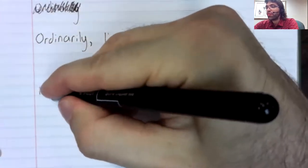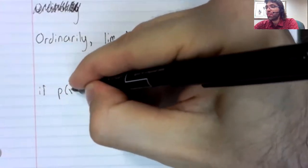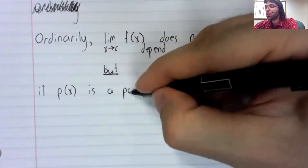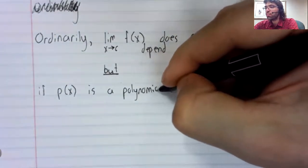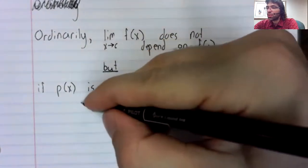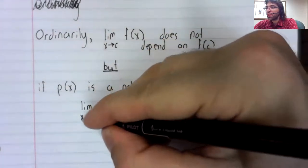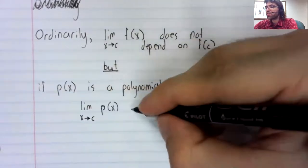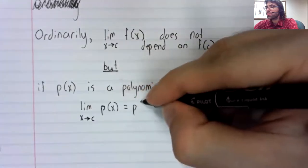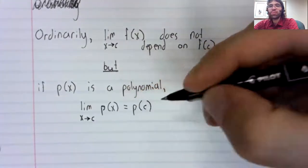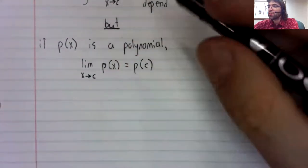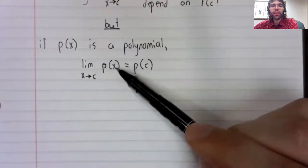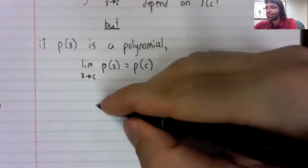But if p of x is a polynomial, the limit as x approaches c of p of x is p of c. So, in this case, you compute the limit just by taking c and plugging it in.